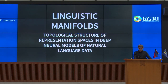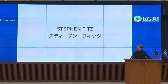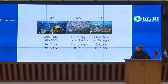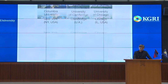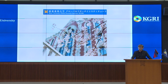Before we dive into these topics, I will briefly introduce myself. My name is Stephen Fitz. I studied for my undergraduate degree at Columbia University in New York, and for my graduate degrees at the University of Cambridge in the UK and the University of Chicago in the USA. I'm currently a member of the Keio Global Research Institute in Tokyo, and I also teach courses at Keio University relating to artificial intelligence, programming, and data science.